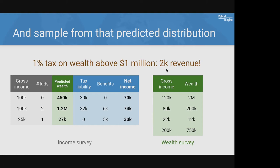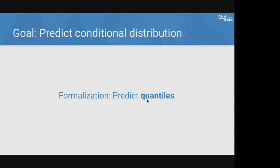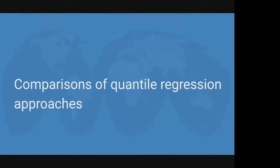Now we actually have some revenue — this starts to look more reasonable. We could calibrate these results against external data. This is really the goal that SynthImpute and data fusion in general goes for, whether made explicit or not. The formal way to express this is that we're trying to predict the conditional quantiles of each record.